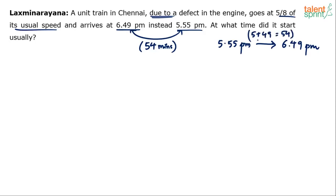Or what you can do is convert this to 24-hour clock. 5:55 PM is like 17:55 hours and 6:49 is like 18:49 hours. There also you'll have to use this logic of 5 minutes plus 49 minutes, but maybe that makes it easier for some of you. So 54 minutes is the difference.